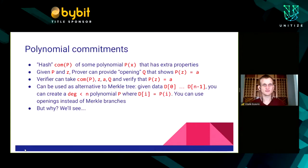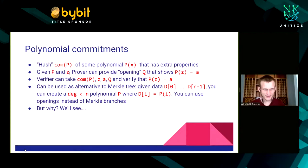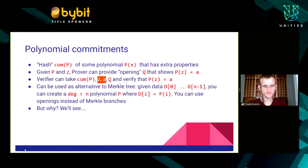The second approach uses vector and polynomial commitments. A polynomial commitment is a special kind of hash of a polynomial — a big object with many coefficients containing a lot of information — but with extra properties. The key property is: if you give someone a commitment to polynomial p and a coordinate z, the prover (who has the actual polynomial) can provide an opening proof q. The verifier, with just the commitment, the opening proof, and the coordinate, can verify that p(z) actually equals a specific value.